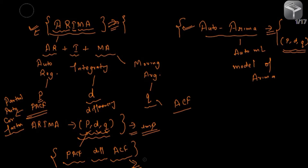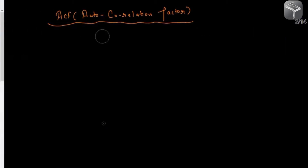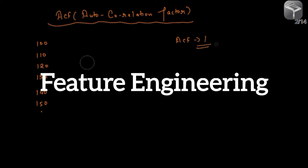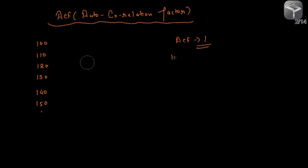In the next session, we will first understand what ACF is and try to visualize it. Then we will move to differencing, and after that to PACF. That's our approach to learning the ARIMA model. Let me open a new page. Let's understand what exactly ACF is. Let's say I have some data points: 100, 110, 120, 130, 140, and multiple more data points. If I say ACF order is one, what exactly does that mean?